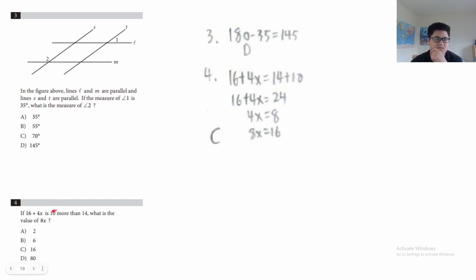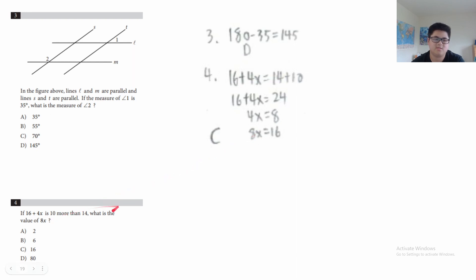Question 4: if 16 + 4x is 10 more than 14, what is the value of 8x? '10 more than 14' means 10 + 14 = 24. So 16 + 4x = 24, subtract 16 from both sides to get 4x = 8, then multiply by 2 to get 8x = 16. The answer is C.